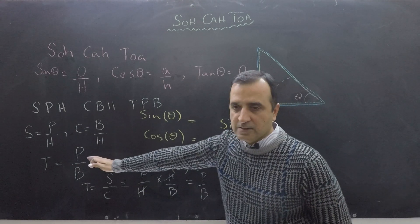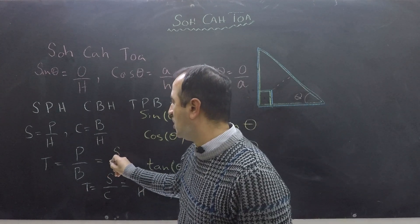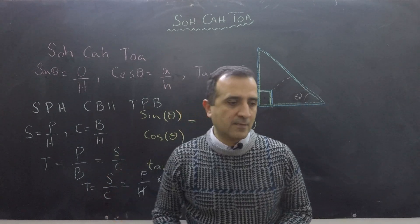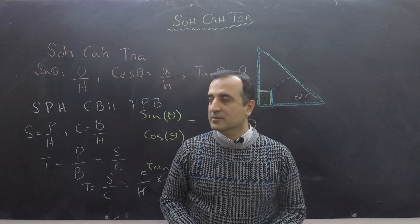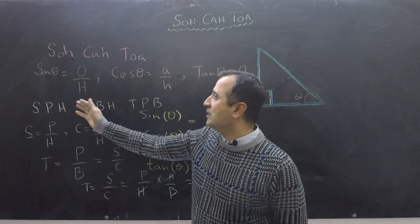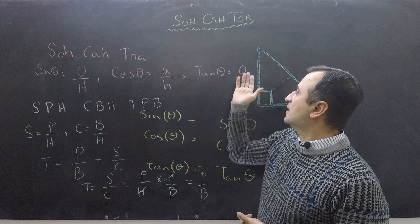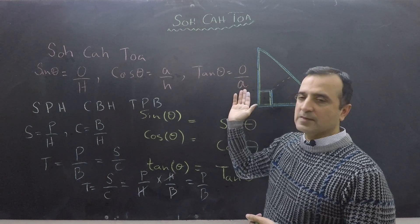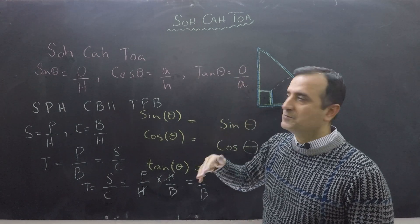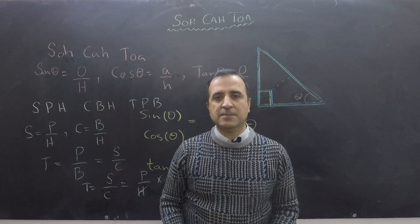So tan is basically equals to sine theta over cos theta. Make sense? Similarly we can find from here that if we take sine theta over cos theta we will get opposite over adjacent which is basically tan. So now let's do some examples to make these concepts crystal clear.